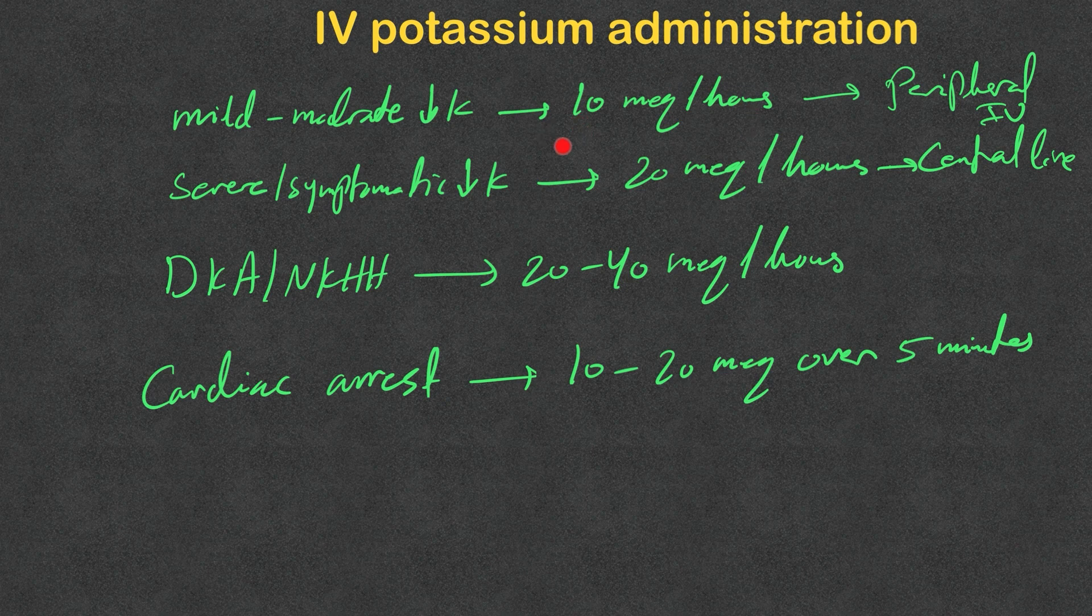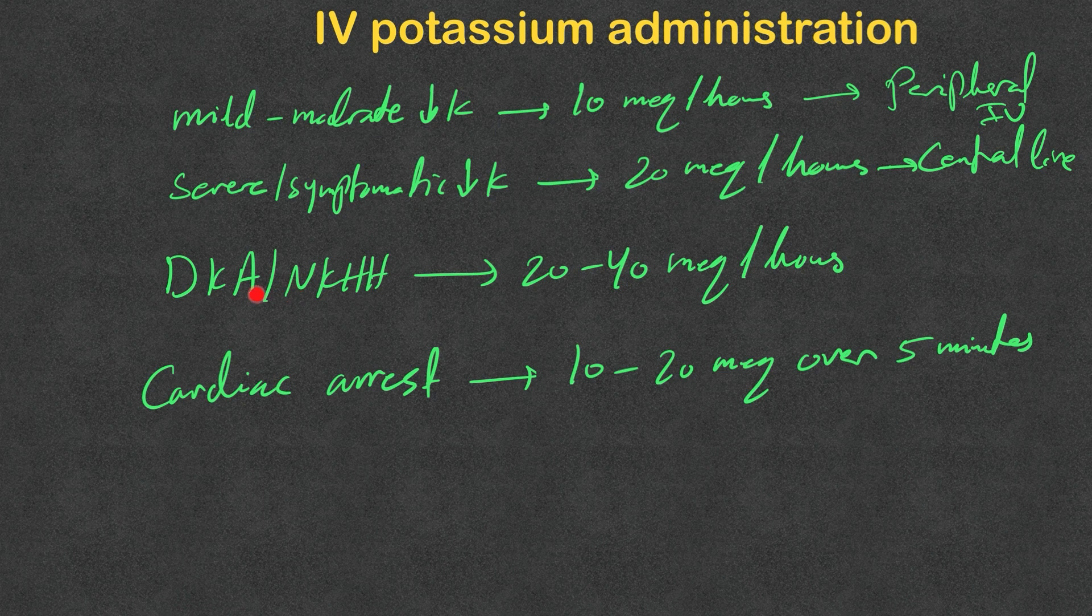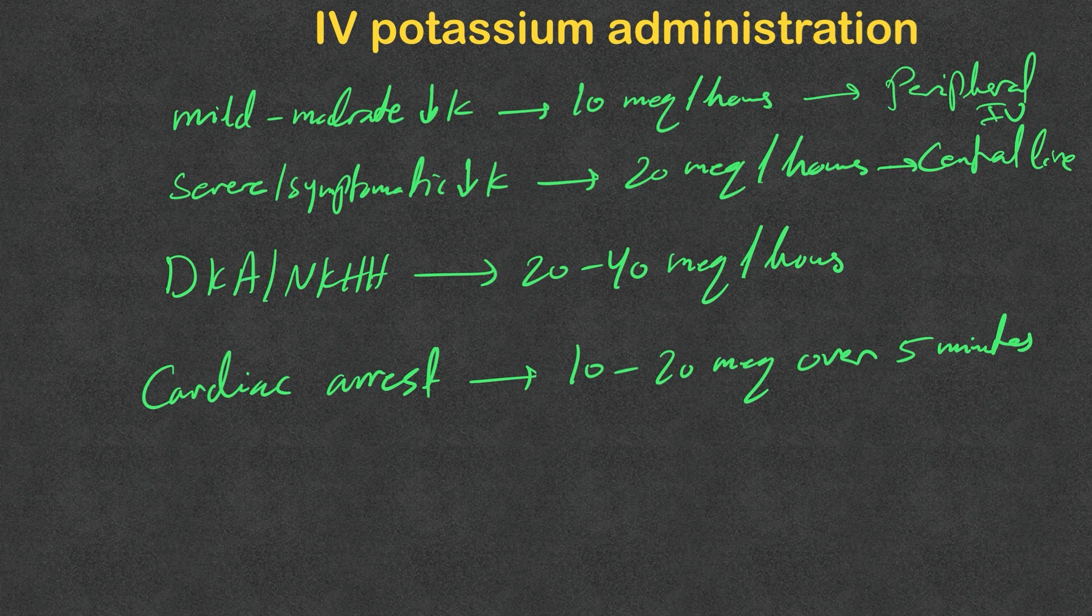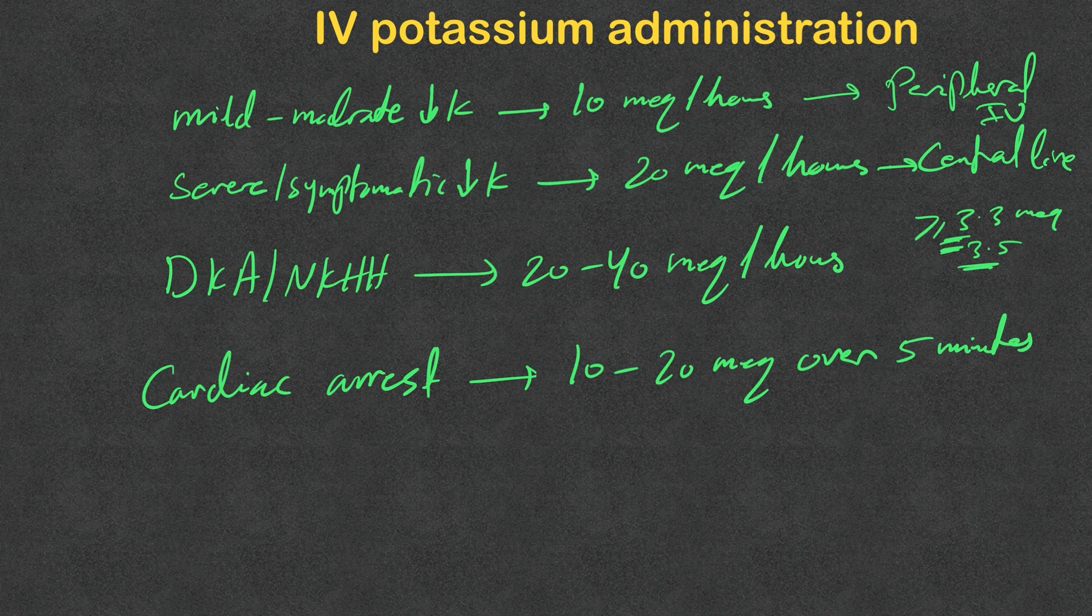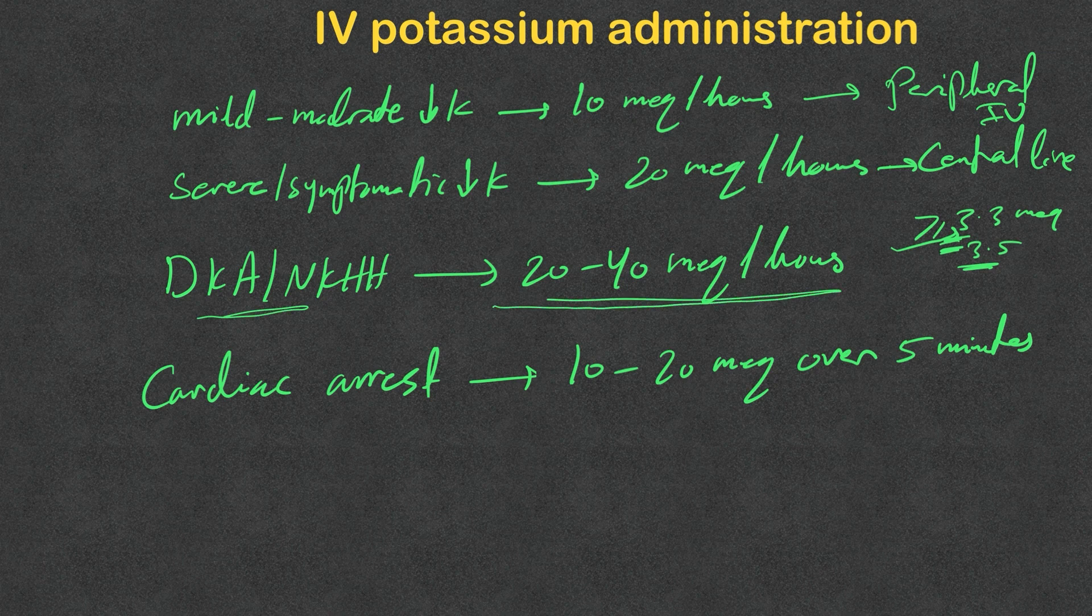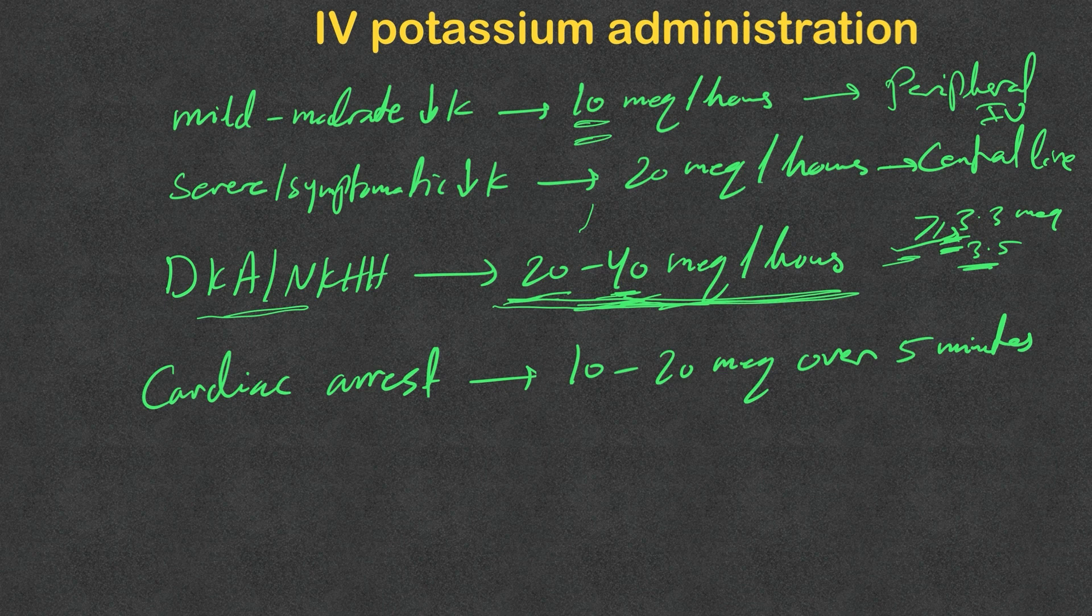DKA and non-ketotic hyperosmolar hyperglycemia: these patients need to start insulin drip as soon as possible, and you know insulin shifts potassium intracellularly. They already have large deficits of potassium from osmotic diuresis. We cannot start insulin drip unless the potassium is equal or above 3.3 milliequivalents, some say 3.5. If the potassium is less than that, we need to quickly raise their potassium level, and that's why we go to a higher rate: 20 to 40 milliequivalents per hour. It's okay to go as high as 40 milliequivalents per hour as long as you are monitoring that.